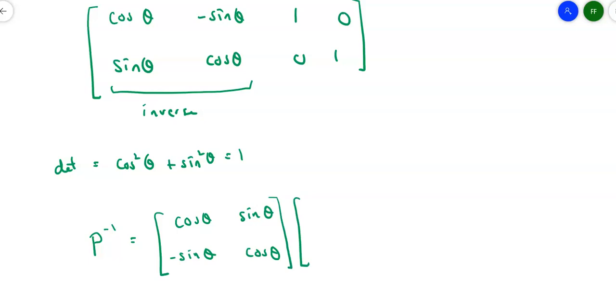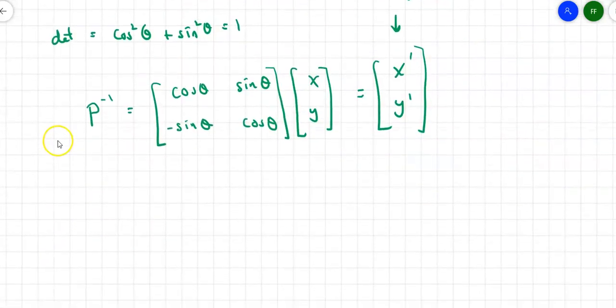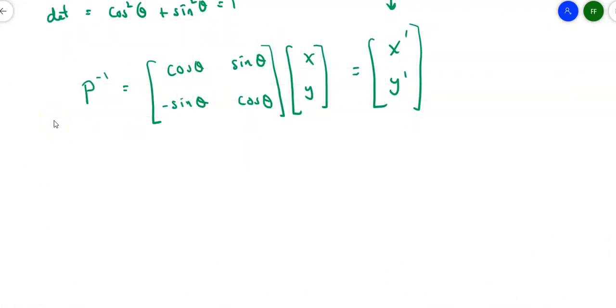When I multiply that by (x,y), I want to produce (x',y'). These are the values of x and y relative to the new basis. If you do matrix multiplication here, you'll end up with x cos θ + y sin θ = x', and -x sin θ + y cos θ = y'.